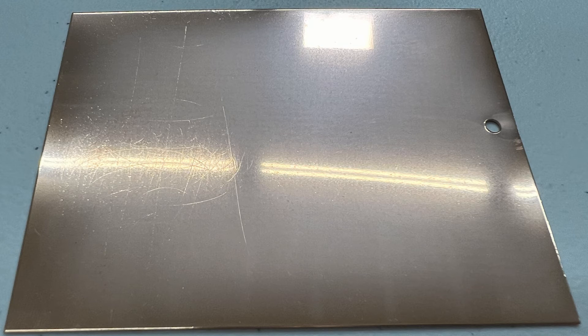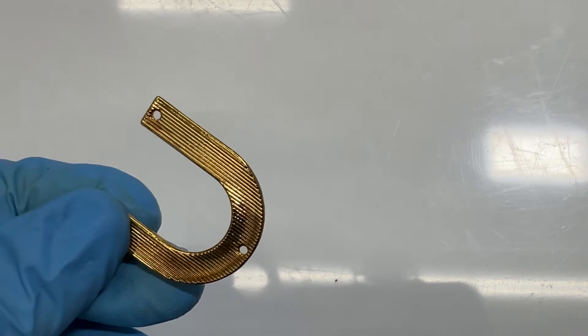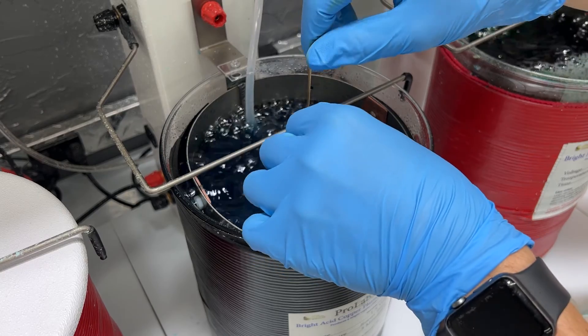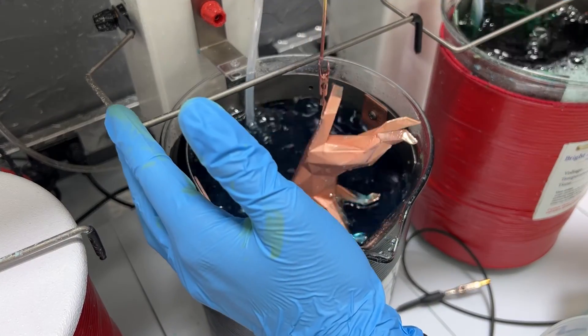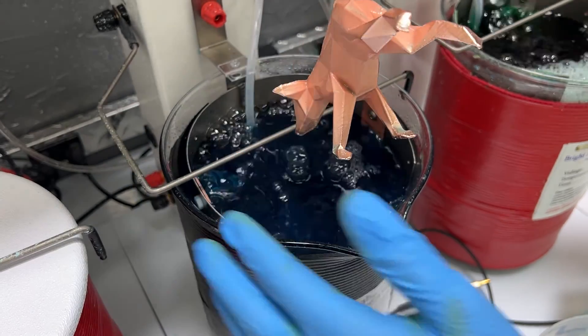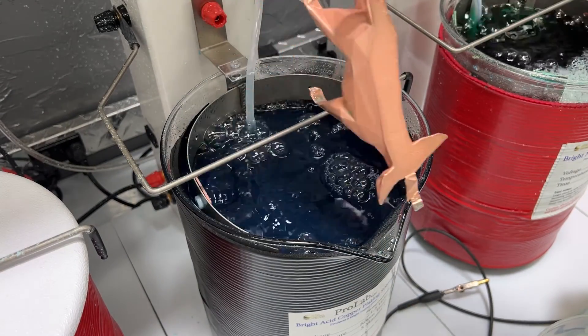Plating for about five minutes with bright acid copper should be sufficient to fill in scratches. To cover up texturing or pitting, you will need to plate for about 15 to 20 minutes. In some situations, it will be necessary to periodically remove the item from the solution and sand it down to level out the surface and then repeat that process until you've achieved the look that you are wanting.